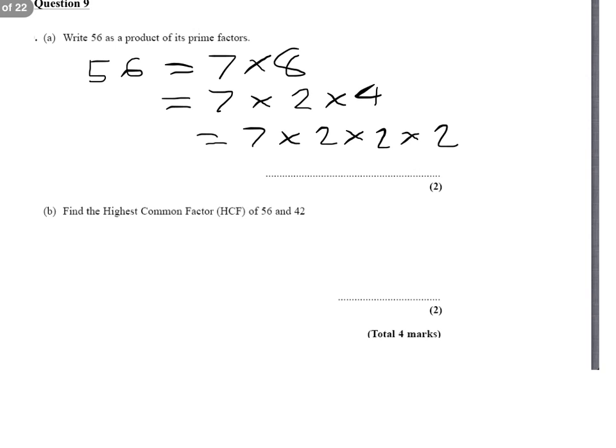Now, the second part of the question: what's the highest common factor of 56 and 42? I'm going to write 42 out as a product of prime factors.